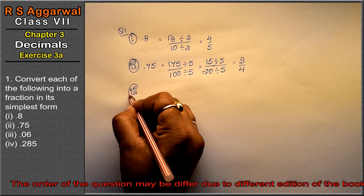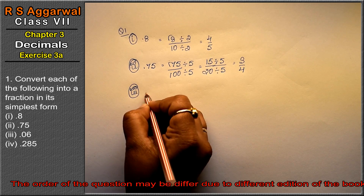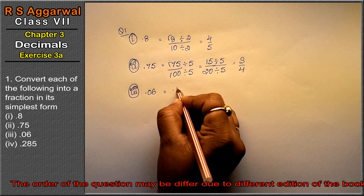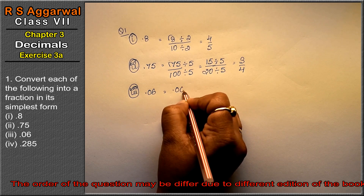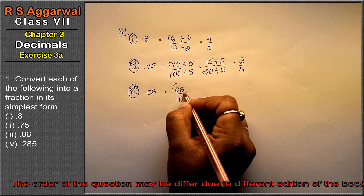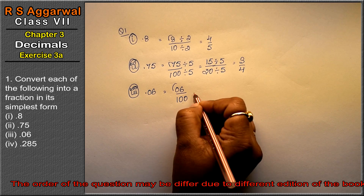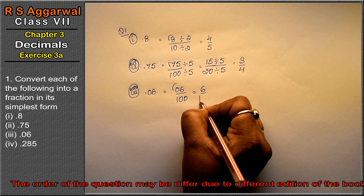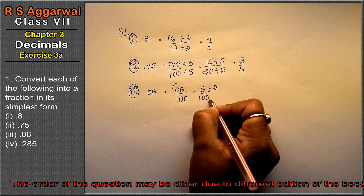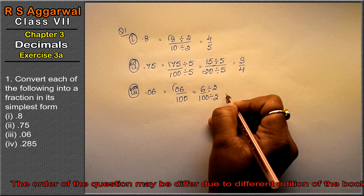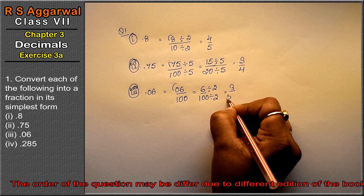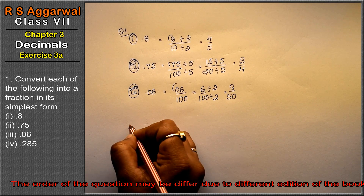Let's do the third part. Third part is 0.06. Since there are 2 digits after the decimal point, we write it as 6 over 100. We divide by 2: 6 divided by 2 is 3, and 100 divided by 2 is 50. So 3 upon 50 is the answer.